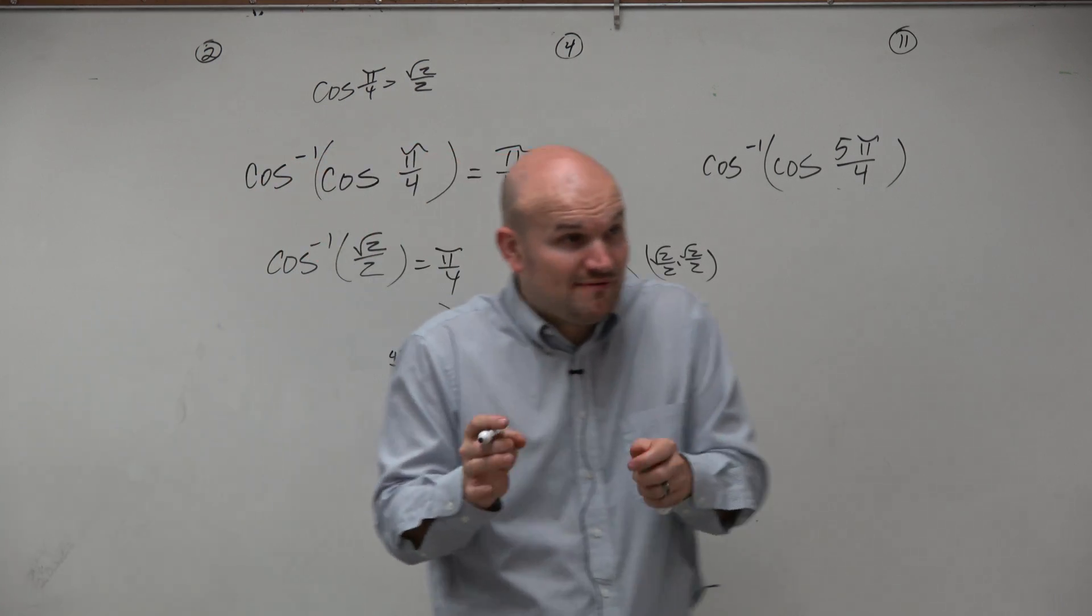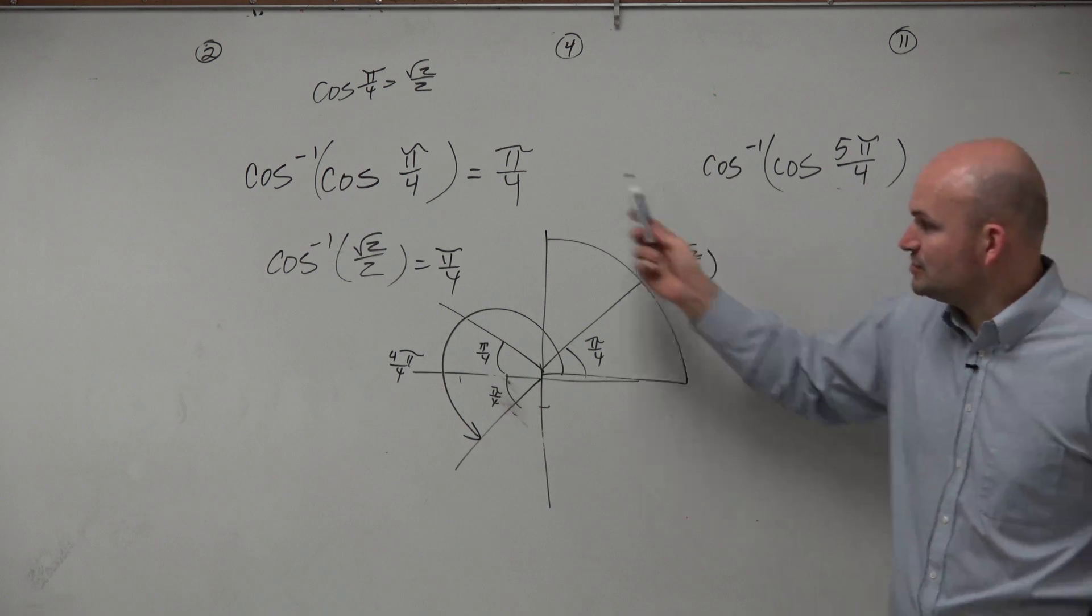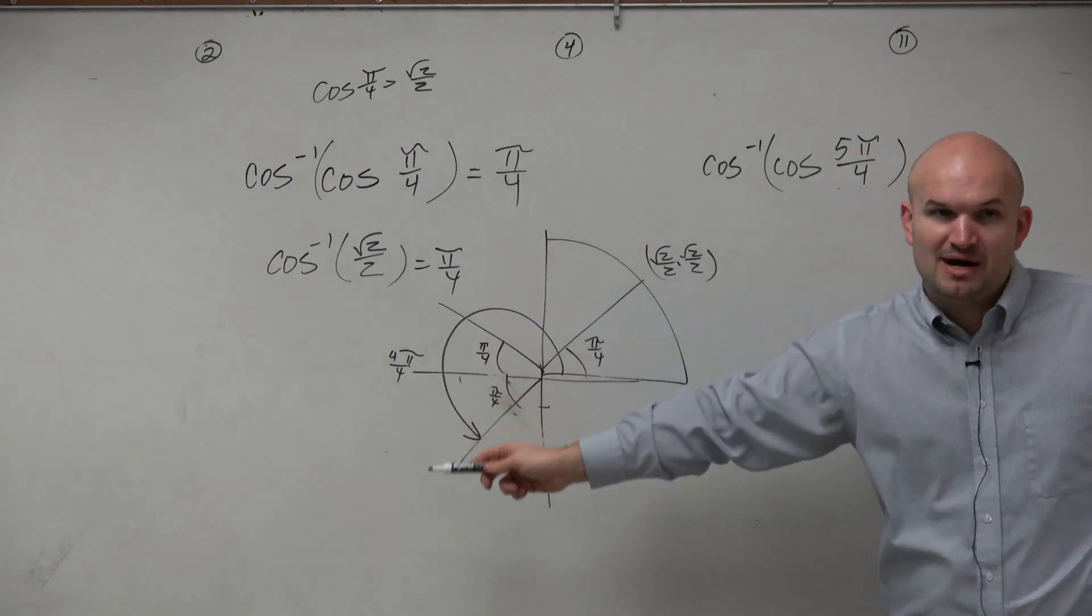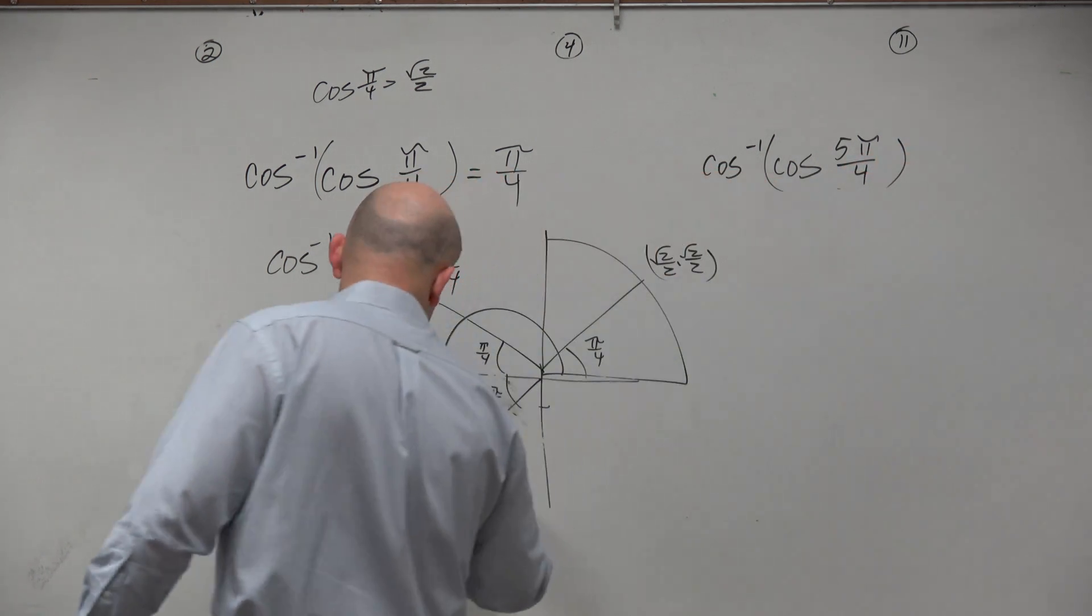Now, since I'm using these reference angles, you guys can see all this is is a reflection about the origin, reflection about the y-axis, reflection about the x-axis. So therefore, this coordinate point, that's for 5 pi over 4.